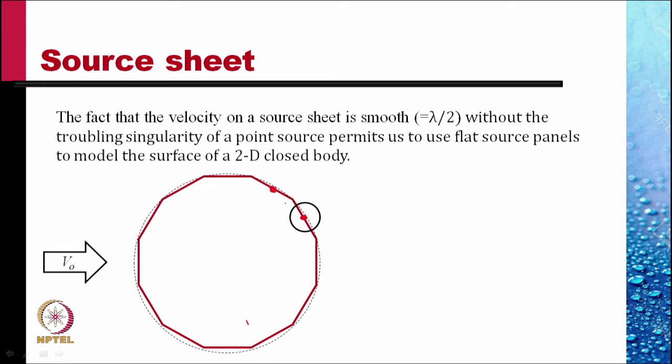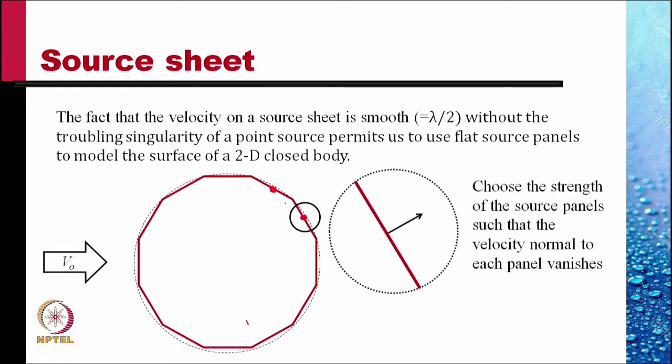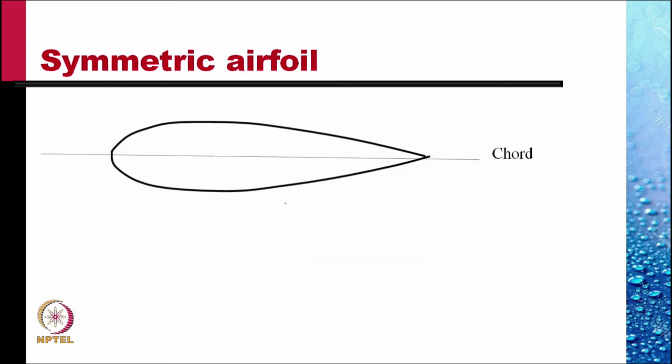So we get n equations in n unknown source strengths. Choose the strength of the source panels such that the velocity normal to each panel vanishes.